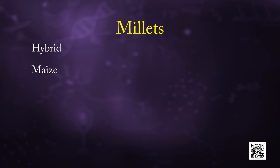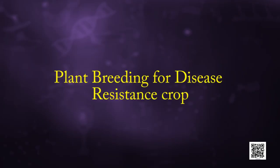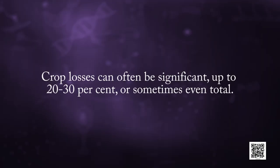Millets: hybrid maize, jowar and bajra have been successfully developed in India. Hybrid breeding has led to the development of several high yielding varieties resistant to water stress. Now let us talk about plant breeding for disease resistant crops. A wide range of fungal, bacterial and viral pathogens affect the yield of cultivated crop species, especially in tropical climates.